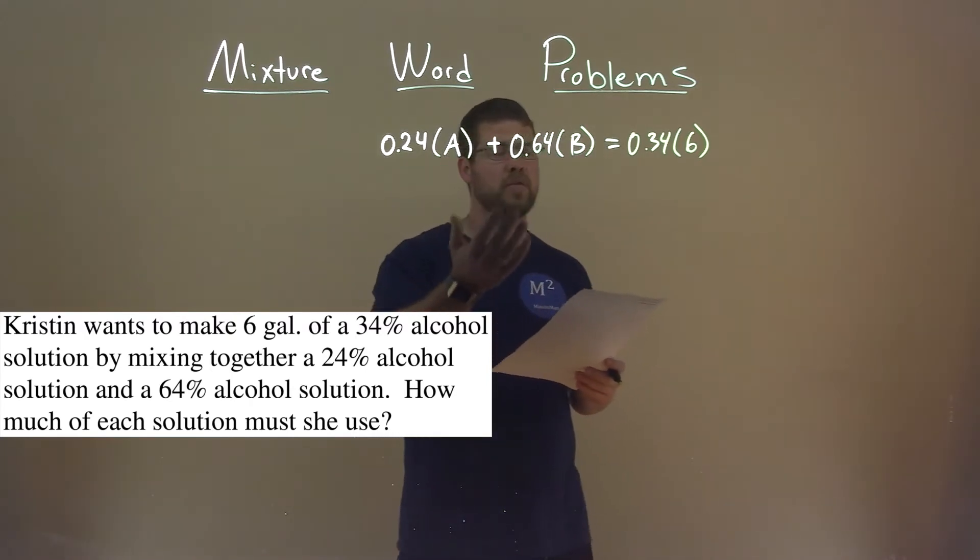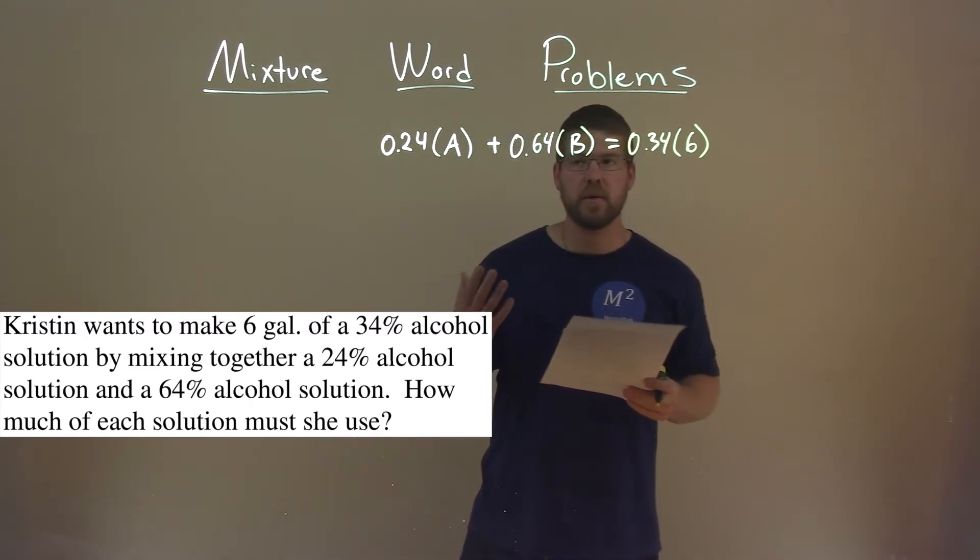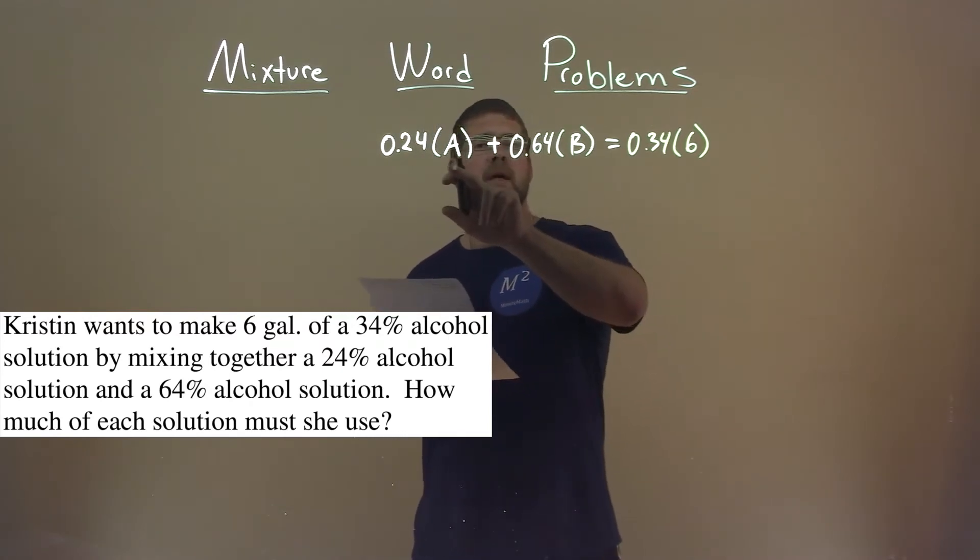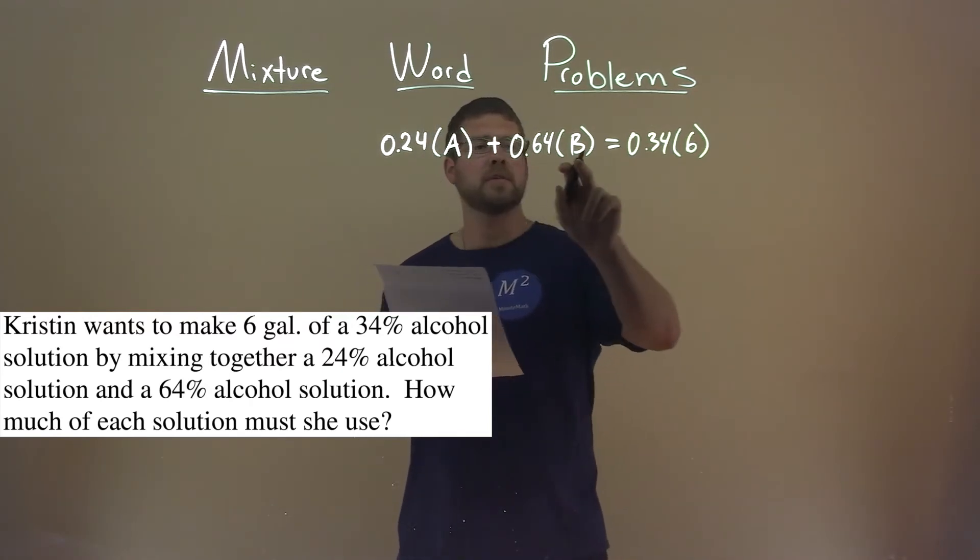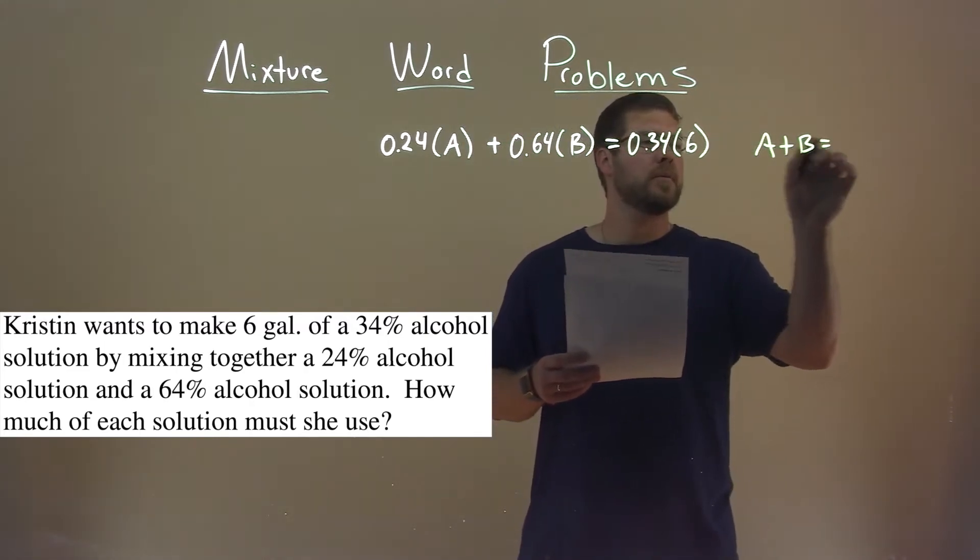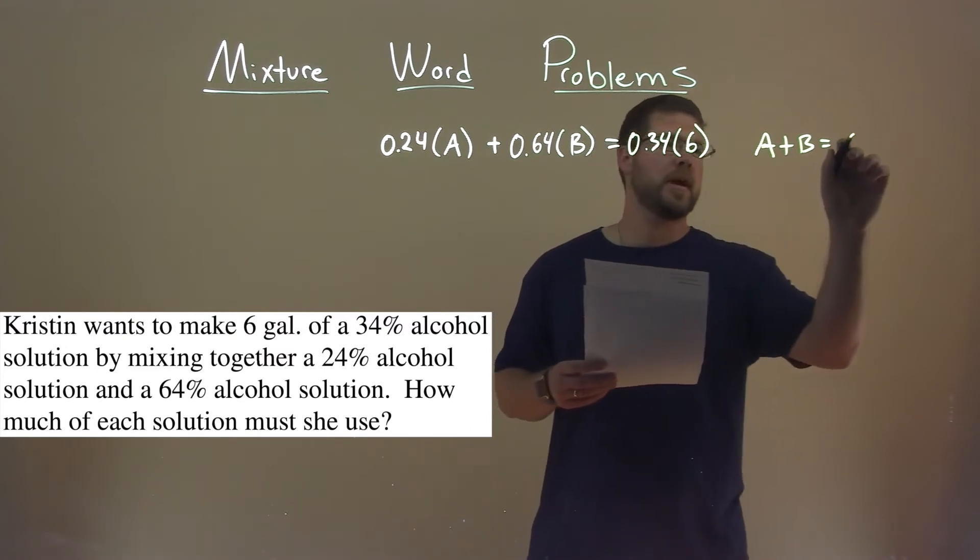But again, I have an equation here with two variables. I need to find a second equation so I can solve this system. Well, we know that the amount of each one individually of those two solutions, A plus B, should equal 6 total gallons.